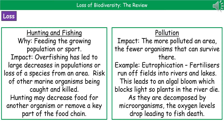Last one is pollution. The more polluted an area is, the fewer organisms that can survive there. A good example of this is eutrophication, which is where the fertilizers run off the fields into rivers and lakes. That leads to an algal bloom, which blocks the light, so any plants in the river die. And as they're decomposed by the microorganisms, the oxygen levels drop, leading to the death of all the fish.